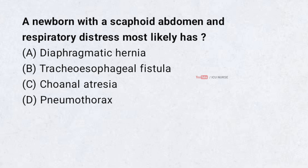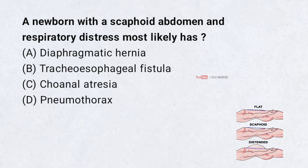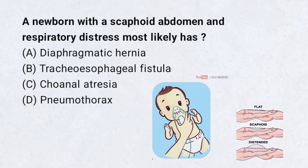A newborn with a scaphoid abdomen and respiratory distress most likely has: A. Diaphragmatic hernia. B. Tracheoesophageal fistula. C. Choanal atresia. D. Pneumothorax. Correct answer: A. Diaphragmatic hernia.